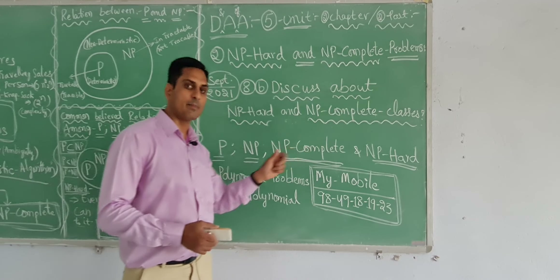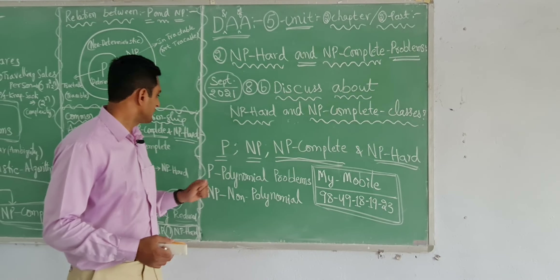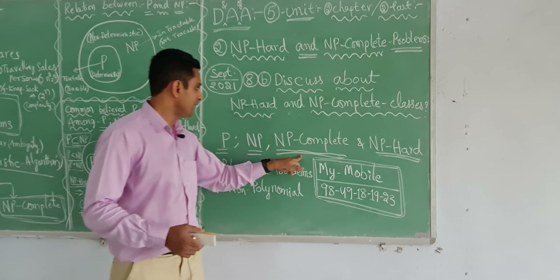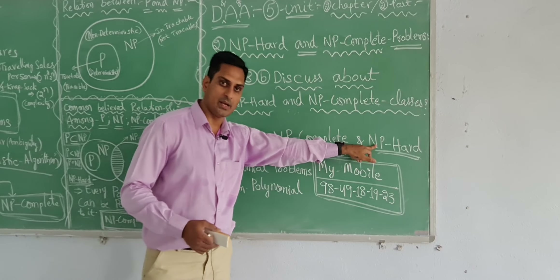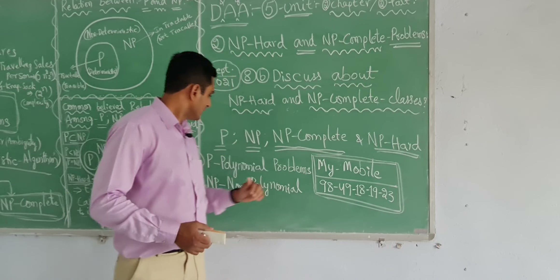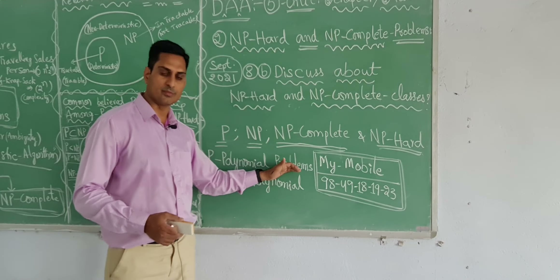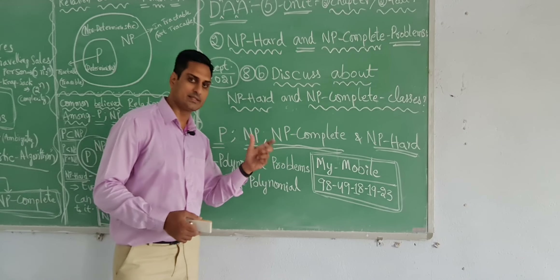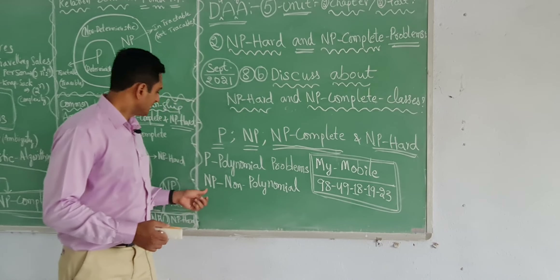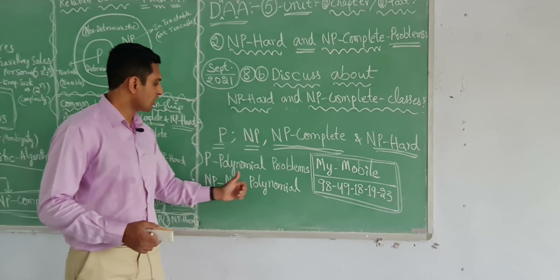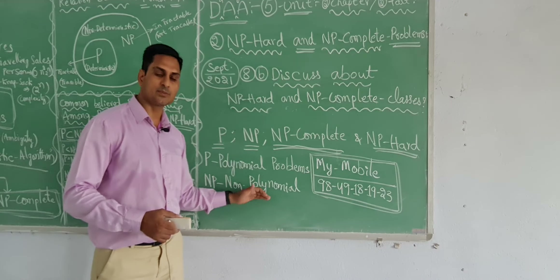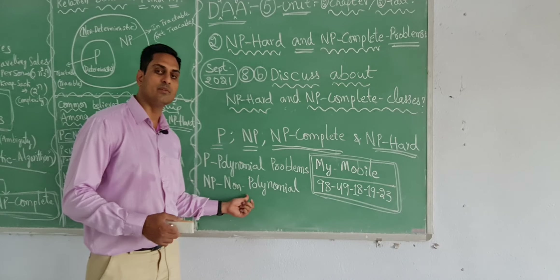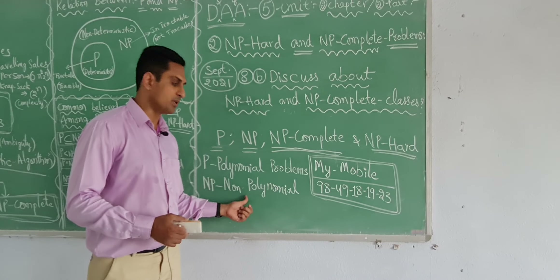Before that, some basics — P, NP, NP-complete, and NP-hard. P means polynomial problems, solved in less time. NP means non-polynomial, exponential — it takes more time for the problems.